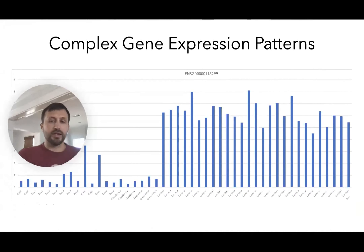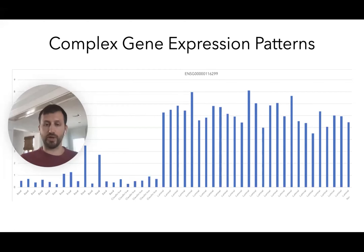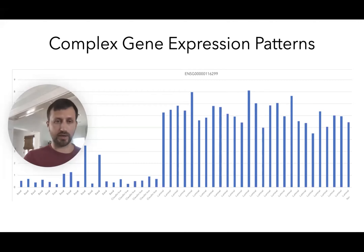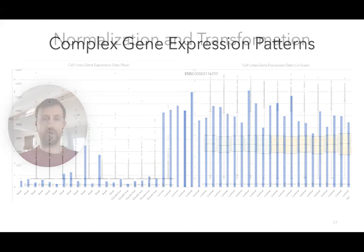We'll also see how transcriptomic data might include additional information for use cases: cancer, neurodegenerative diseases, infectious diseases, and even agriculture and biotechnology. We'll look at several examples to see how the same type of data can be used in different ways, learn about typical outputs, how people produce figures used in publications, and what parameters are typically used and why in different situations.